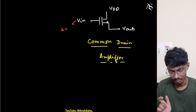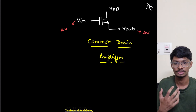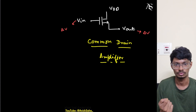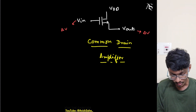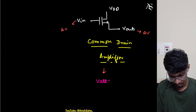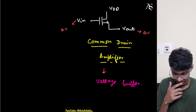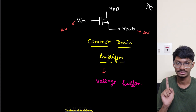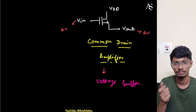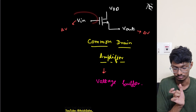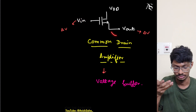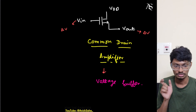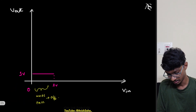A common-drain amplifier acts as a voltage buffer. If we increase the input by delta-V, the output also increases by delta-V — slope equals one. This output can increase up to a maximum of Vdd minus Vtn, because if the output exceeds that, the NMOS turns off and the PMOS is already off, so there is no discharging path.